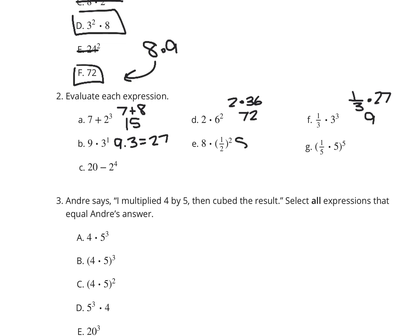8 times 1 half squared is the same thing as 8 times 1 fourth, which is 2. And then you have 1 fifth times 5, all that to the fifth. Well, 1 fifth times 5 is 1, to the fifth power is simply 1.